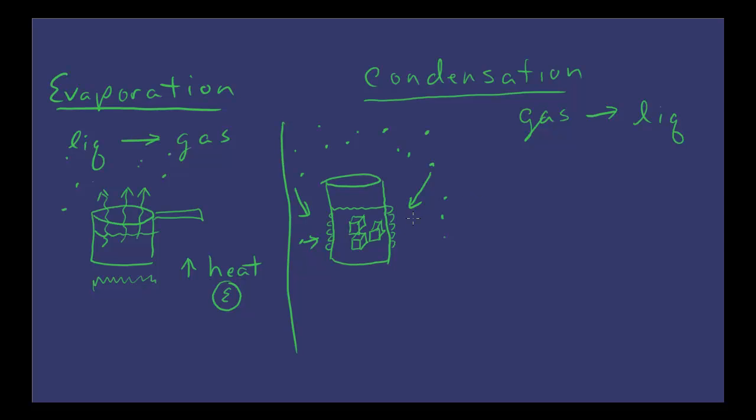When they hit the side of that glass of water, they give up some heat energy. That heat energy gets transferred to the glass. When the molecules lose that heat energy, they turn back into a liquid. So we have these molecules changing from a gas to a liquid - that is condensation, gas to a liquid.